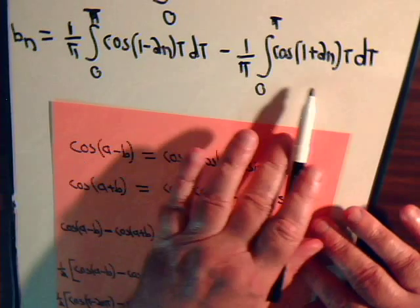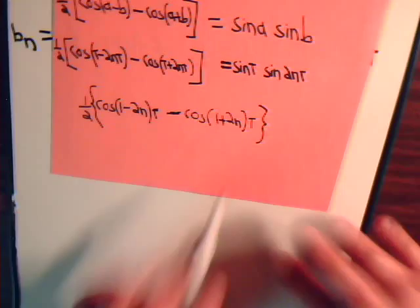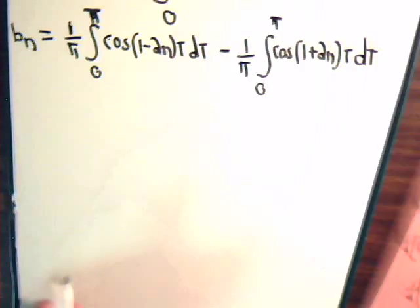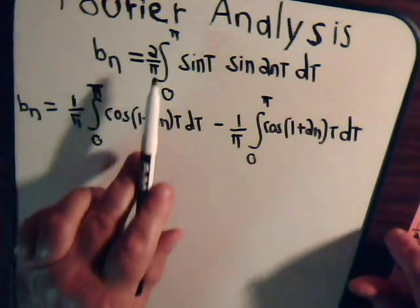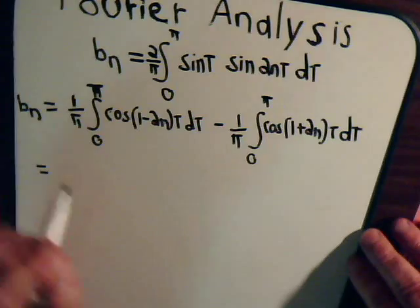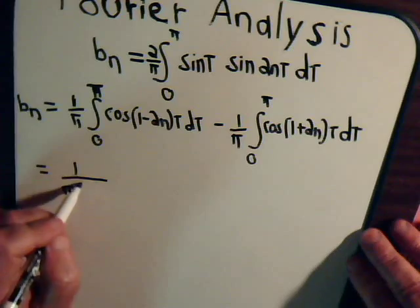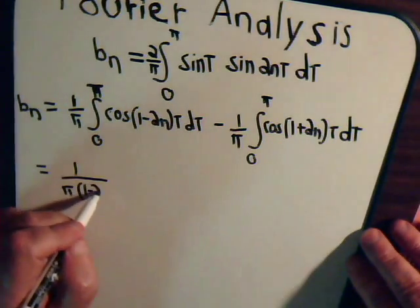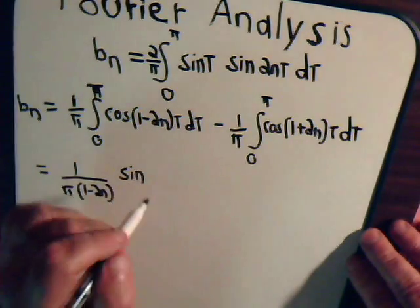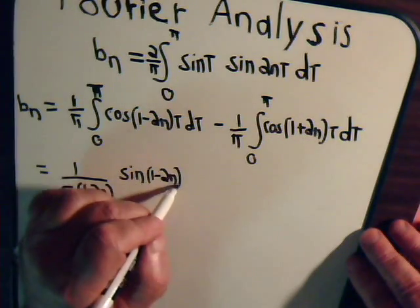And again these are going to split into two parts. We get one half over here, and that one half times the two pi is one pi. The integral of the cosine is plus the sine. So one over pi times one minus two n times the sine of one minus two n t.